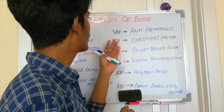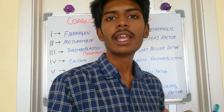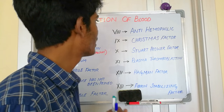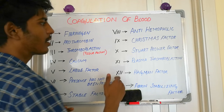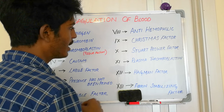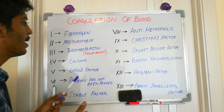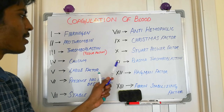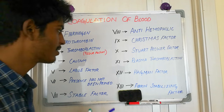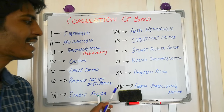Factor 8 is called anti-hemophilic factor. If a patient develops a deficiency of this factor, it causes the disease hemophilia. Factor 9 is Christmas factor. Factor 10 is Stuart-Prower factor. Factor 11 is plasma thromboplastin — remember, factor 11 is plasma thromboplastin while factor 3 is tissue thromboplastin.